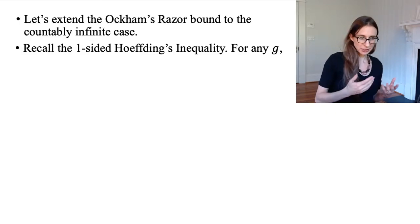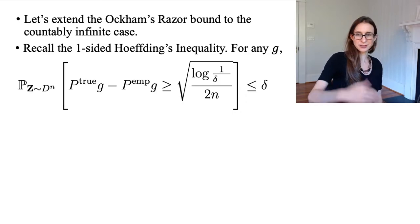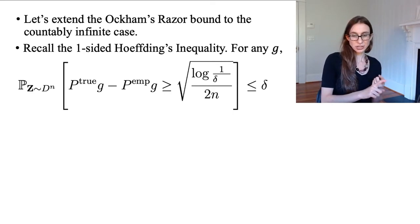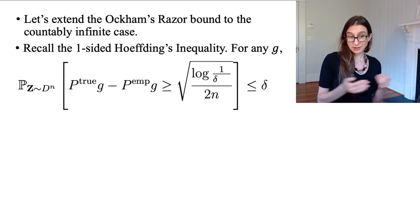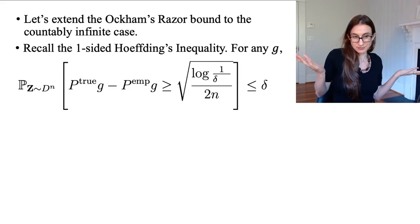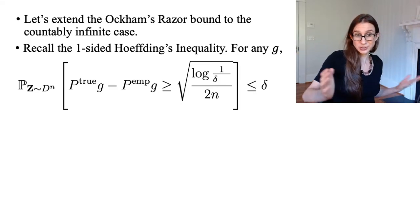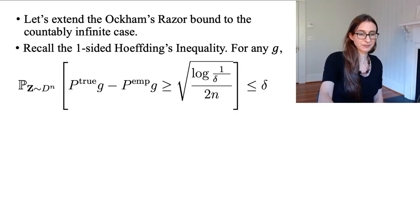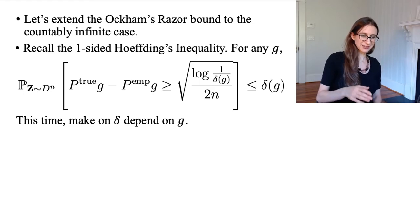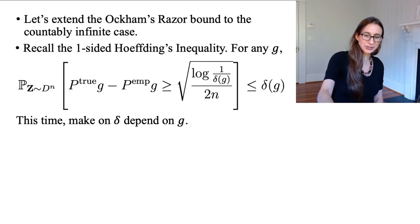We're going to recall the one-sided Hoeffding's inequality, which says that for any g, the probability that something is bad is less than delta. Now I chose the function in advance g and I chose delta in advance, so I could choose them in advance together, and in particular I could choose delta to depend on g. No problem with that because I chose them both before I saw the data. So I'll make delta depend on g, so it's now delta of g.